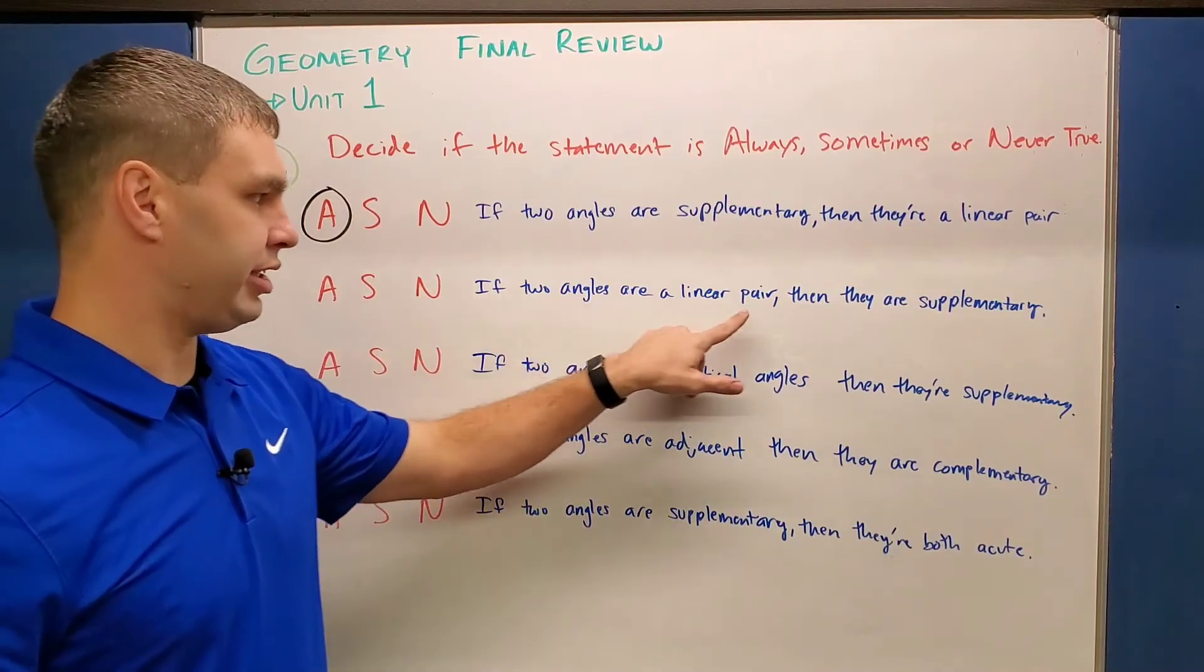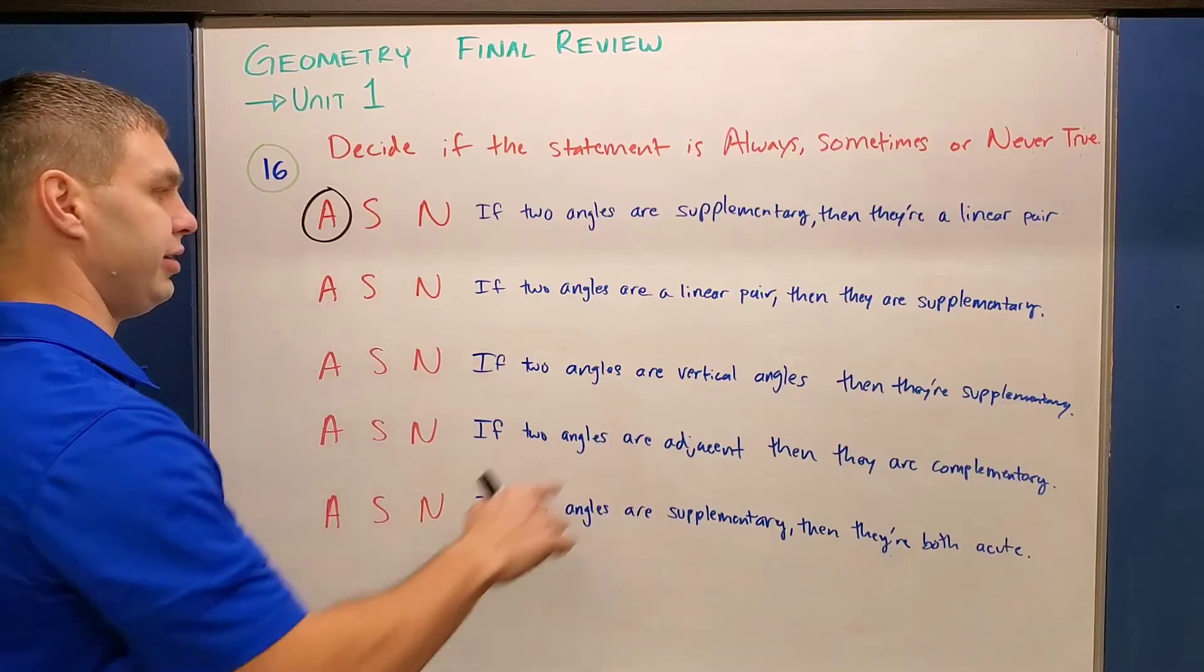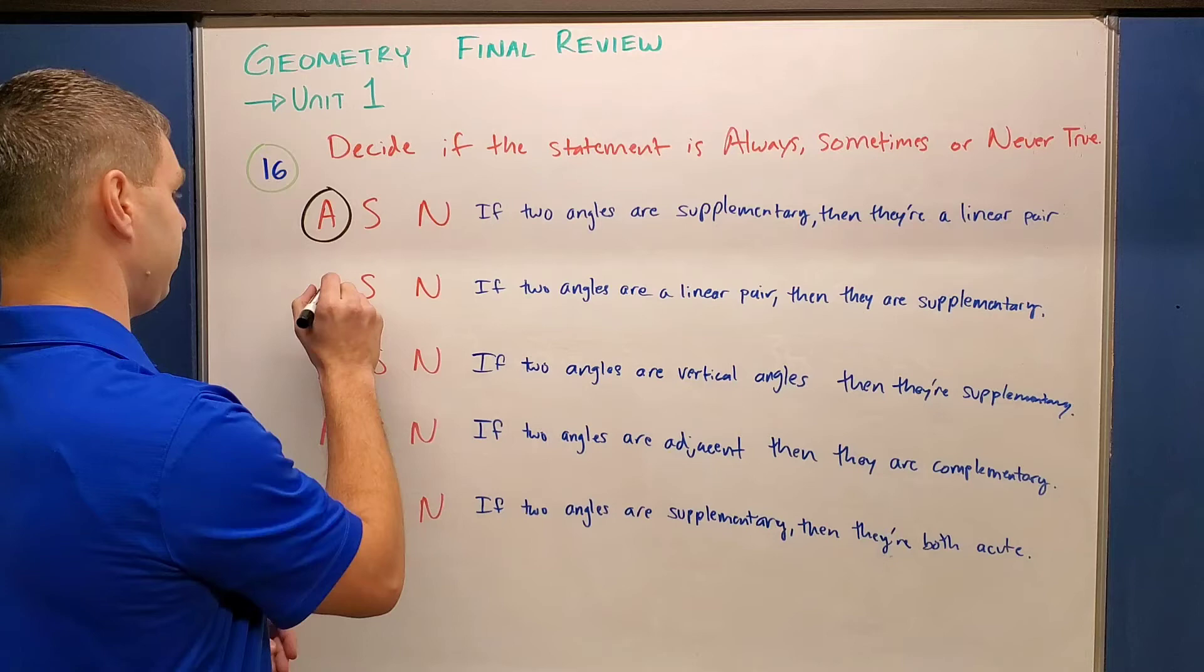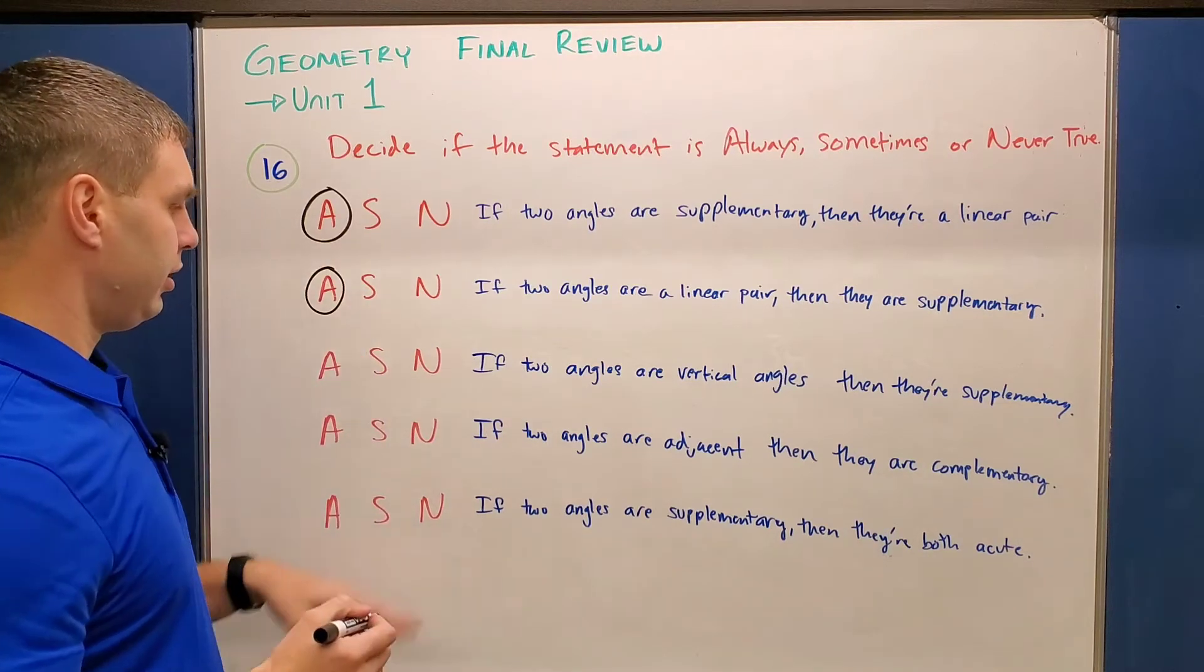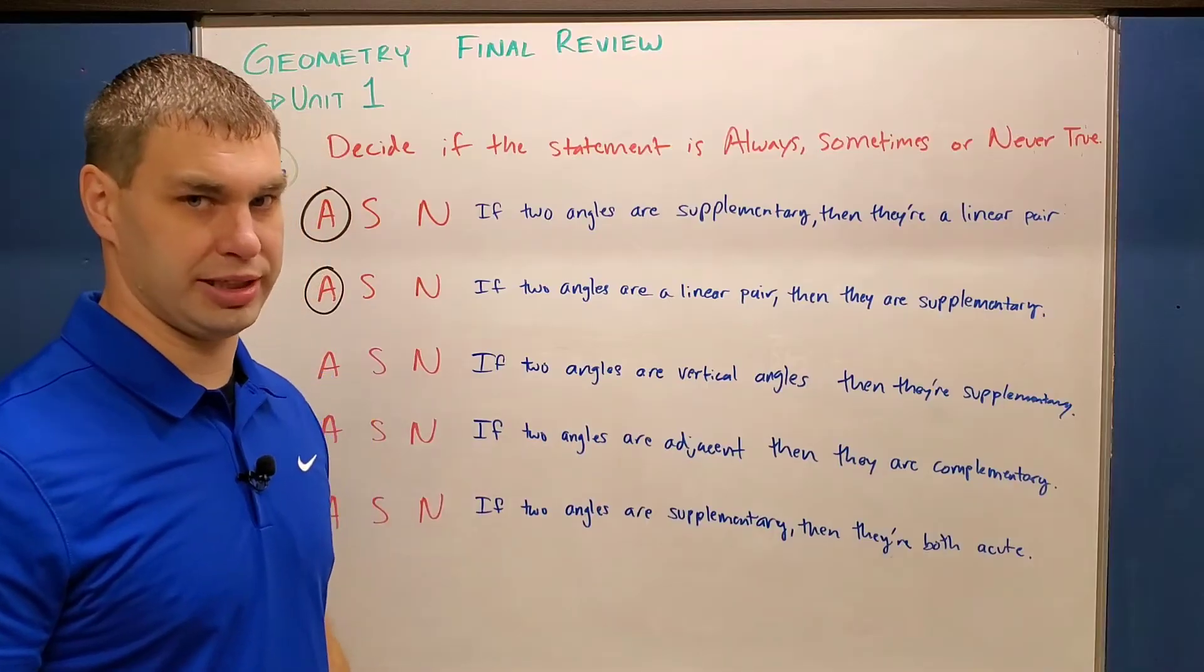Second one, if two angles are a linear pair, then they are supplementary. Yes, again, part of the definition of a linear pair is that they are supplementary. So that would be always. Next one, if two angles are vertical angles, then they're supplementary. Sometimes. If you have two vertical angles, like here, one and two are vertical angles. If those two add up to be 180 degrees, which is the definition of supplementary, that would be true.